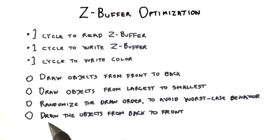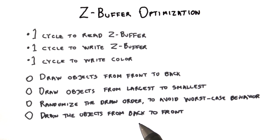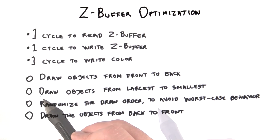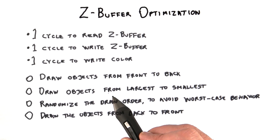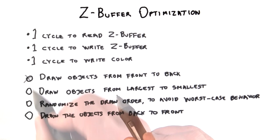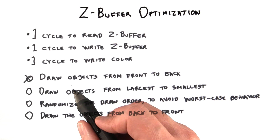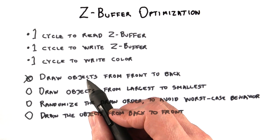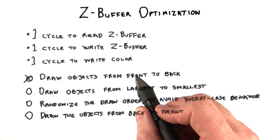Let's look at the answers in reverse order. Back-to-front order is the worst case possible, since each object in turn is the closest object so far, meaning all values read in the z-buffer will also be written. Randomizing might help avoid worst case behavior, but it's not the fastest way. Largest to smallest has no predictable effect, as the testing process happens per pixel, so size doesn't really matter. The first answer is the correct one: roughly sorting and drawing objects from front to back is indeed a way applications optimize GPU performance.